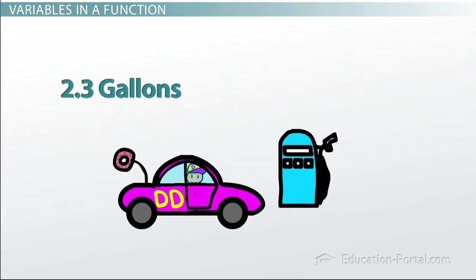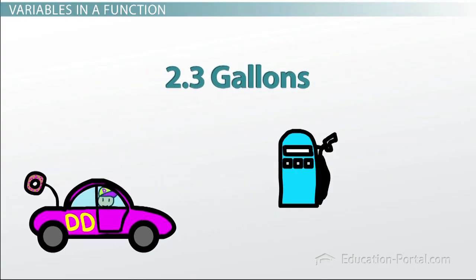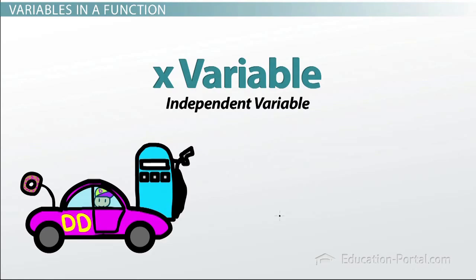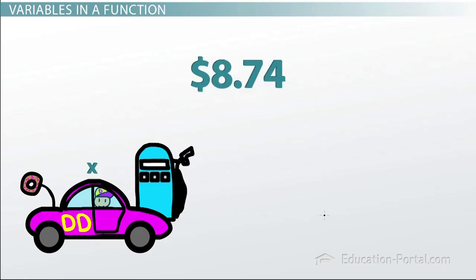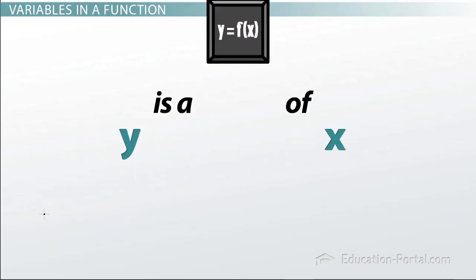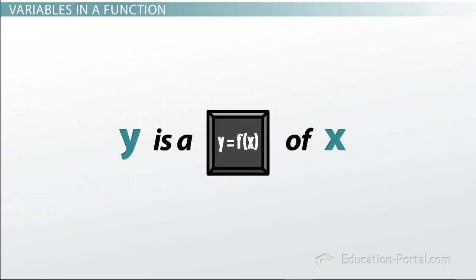You know the number of gallons that you're going to buy. You know an x variable, so this is your independent variable. What you want to know is the amount of dollars that you're going to pay. Why? This is dependent, because it depends on the number of gallons that you buy. So one way to put this mathematically is that the dollars you pay is a function of the gallons you buy, just like what we said before.